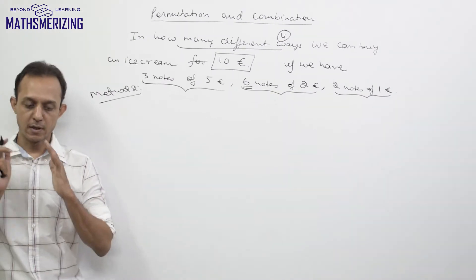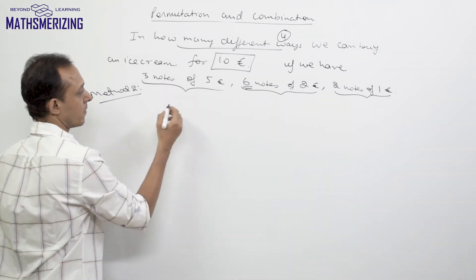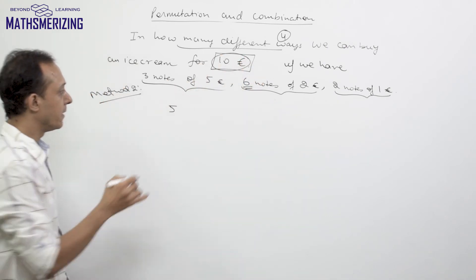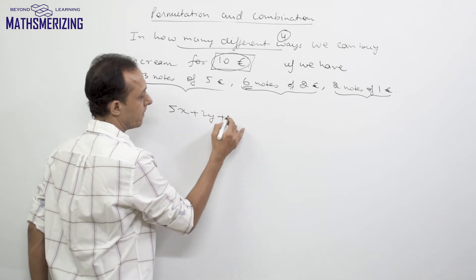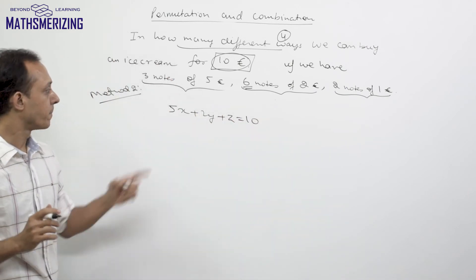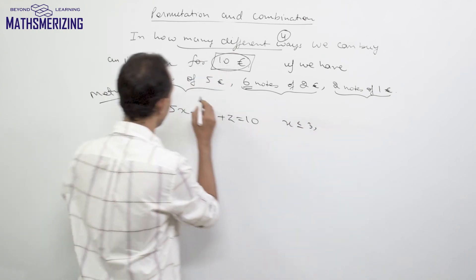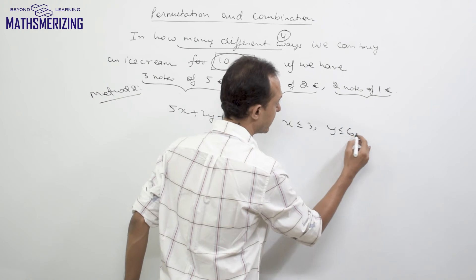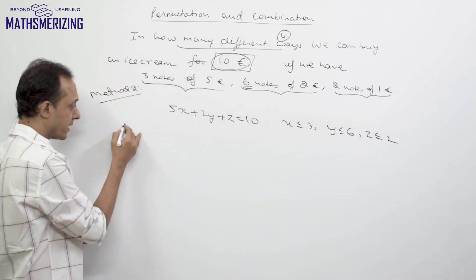Another method for solving the same question: if we must spend exactly 10 euros, we can write 5x + 2y + z = 10, where x ≤ 3 (number of 5-euro notes used), y ≤ 6 (number of 2-euro notes used), and z ≤ 2 (number of 1-euro notes used). We enumerate cases based on the value of x.